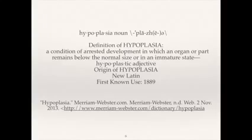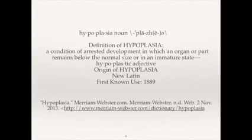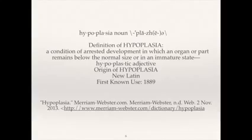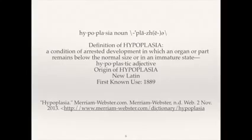What is optic nerve hypoplasia? The definition of hypoplasia is a condition of arrested development in which an organ or part of the brain remains below the normal size or in an immature state. The optic nerve is a collection of thousands of nerve fibers transmitting signals from the eye to the brain where you see. Optic nerve hypoplasia is a congenital anomaly. The optic nerve is underdeveloped and there is excessive loss of neurons before the nerve is fully developed. It is non-progressive. The nerve may be just small and not dysplastic.